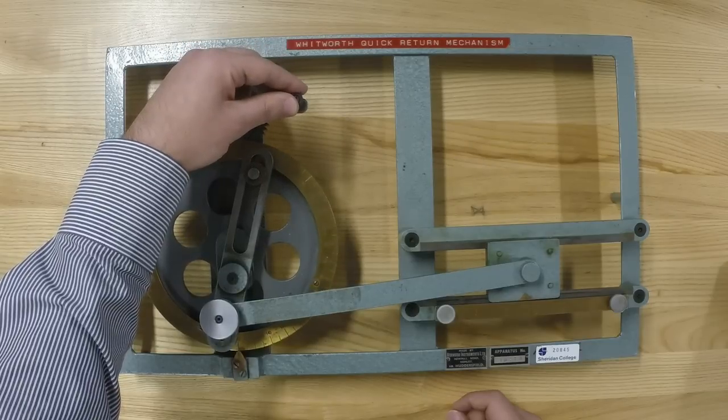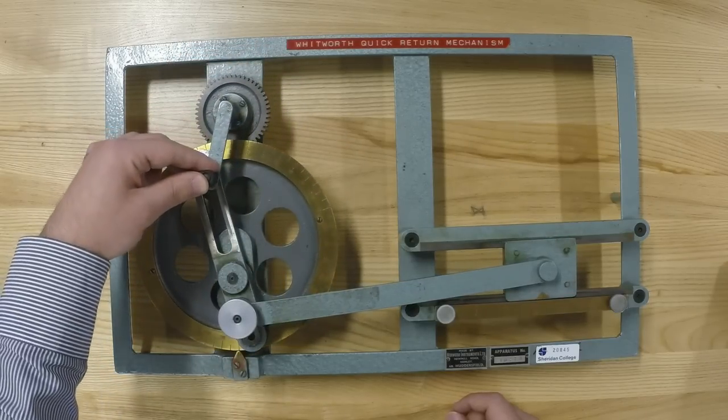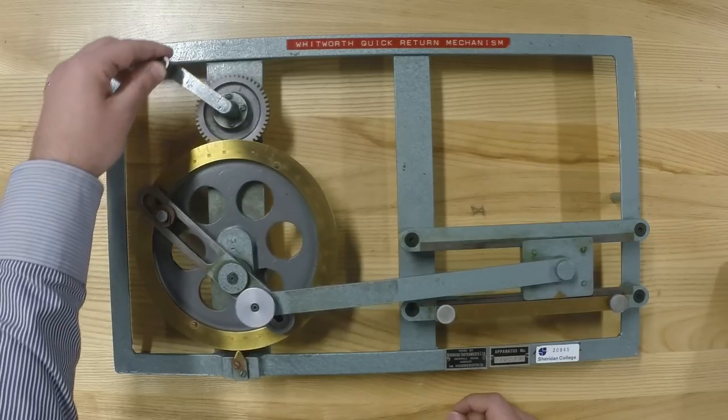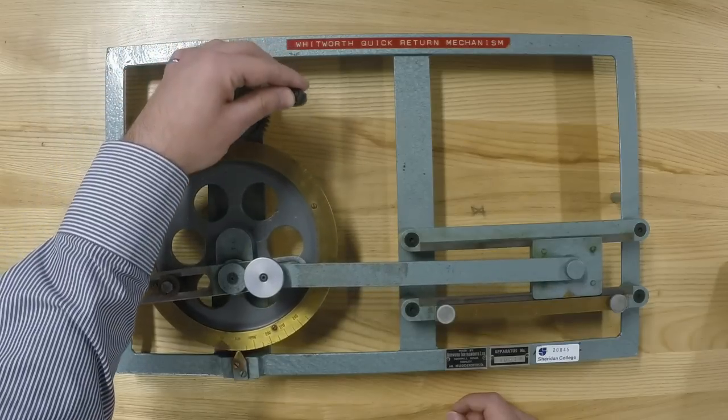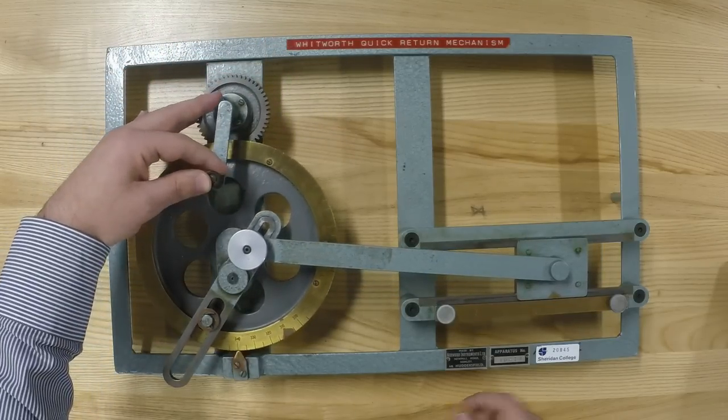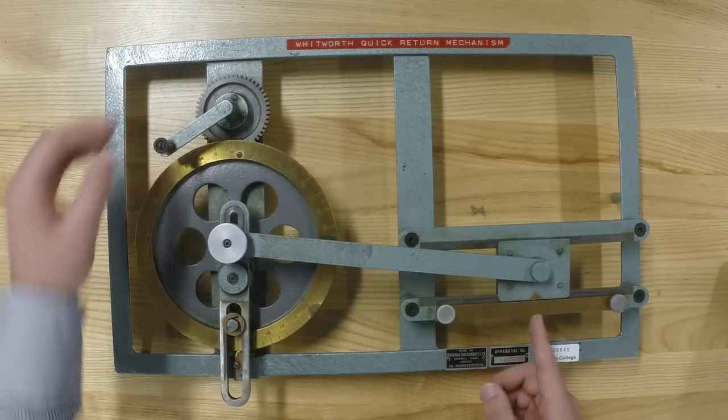For example, now 160. 200. 230. All the way to 330, 340. So read. 360. And 360 you should come back at zero.